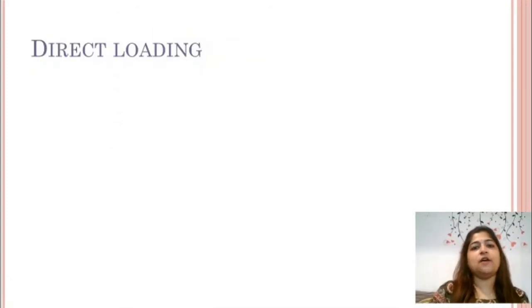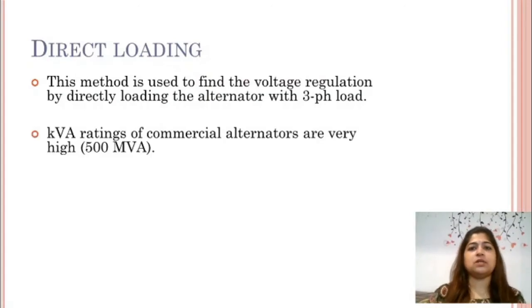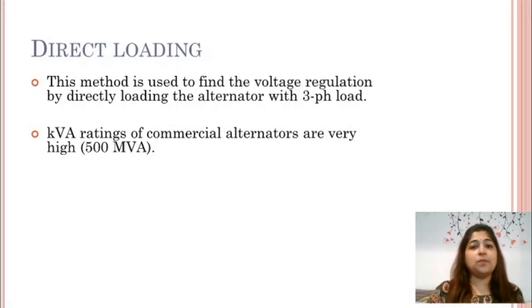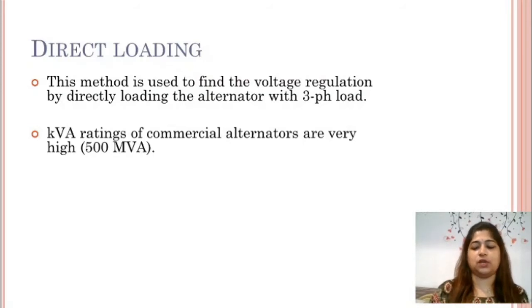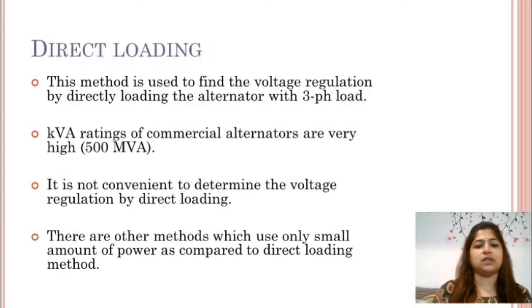Direct loading is a method in which we directly load the alternator with the load and then find out the regulation by measuring the terminal voltage. But this method is used only when you have small loads. When we talk about bigger alternators like commercial alternators which range up to 500 MVA, it is impossible to physically load the alternator by that much load to find out the voltage regulation. So for such alternators there are other methods.